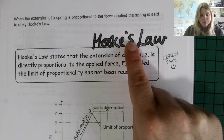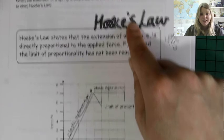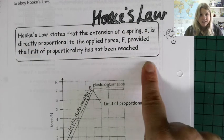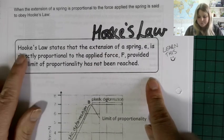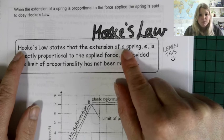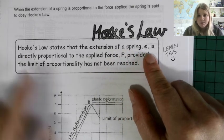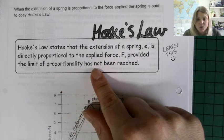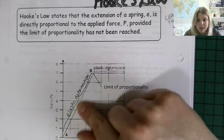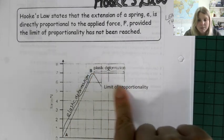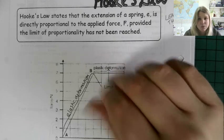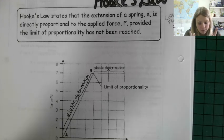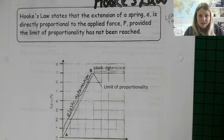Hooke's Law only applies when the spring is behaving elastically — up to the limit of proportionality on the graph. This is something you might be asked to state, so we need to learn it. Hooke's Law states that the extension of a spring (E) is directly proportional to the applied force (F), provided the limit of proportionality has not been reached.